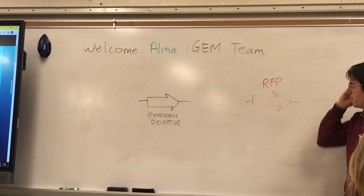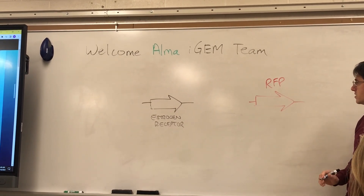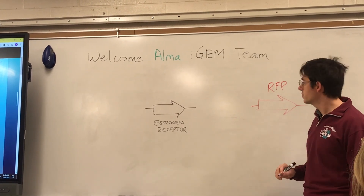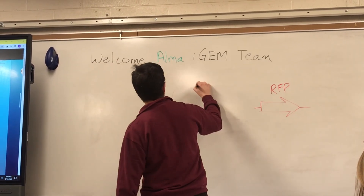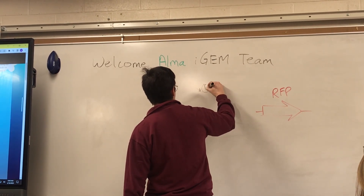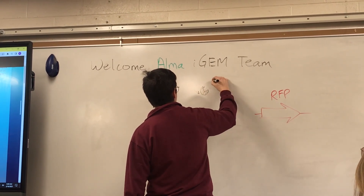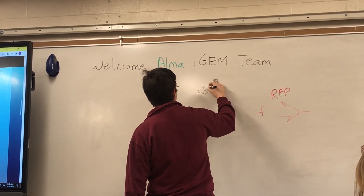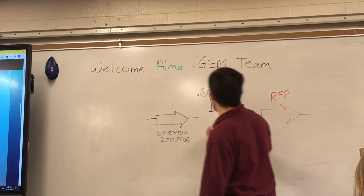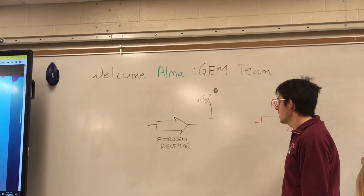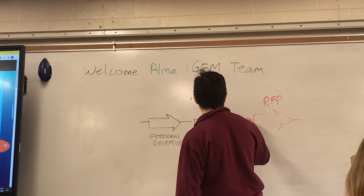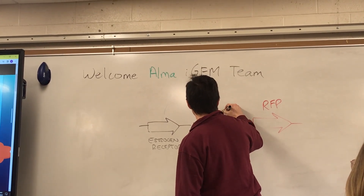There's one last component here. We have to get this to work correctly — what we want to have happen is when DDT is present, we're going to have this estrogen receptor. When DDT is present, it will connect with the estrogen receptor and it's going to shut off a gene. So we needed an intermediate gene here, which we found from another organism — this is something that was a type of repressor.